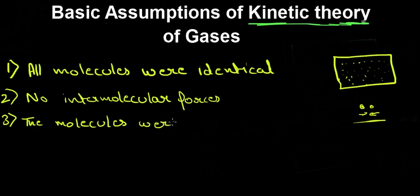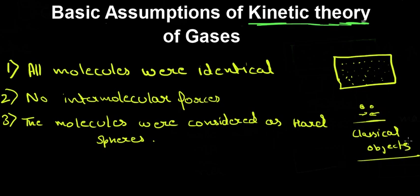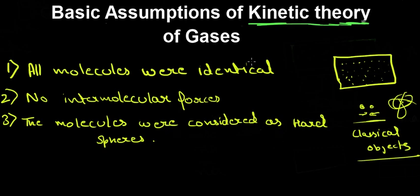The third assumption was that the molecules were considered as hard spheres, meaning they were treated as classical objects. For classical objects we can apply the rules of mechanics, so the molecules will undergo elastic collisions, and from that we develop our kinetic theory. If they were not considered as hard spheres, we couldn't apply those mechanical rules. This is why these assumptions make kinetic theory a limited theory — it is not fully applicable to real gases, but it does tell us a lot about the thermal properties of gases.